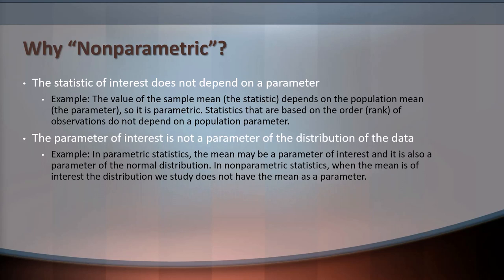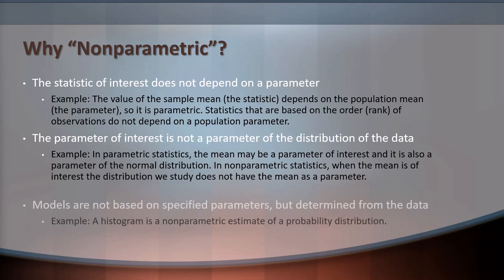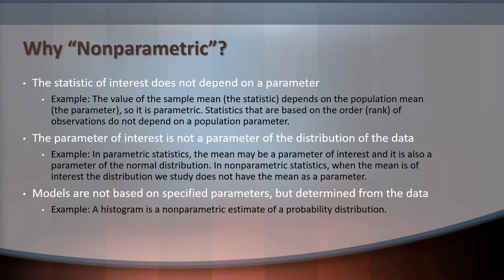The parameter of interest is not a parameter of the distribution of the data. For example, in parametric statistics, the mean is often what we're interested in, and the mean also happens to be a parameter of the normal distribution. In non-parametric statistics, when the mean is of interest, the distribution we study is not based on the normal distribution, so the mean is not a parameter of the distribution of the statistic that we are studying. A third reason is that the models we build are not based on specified parameters, but rather are determined from the sample data that we can observe.